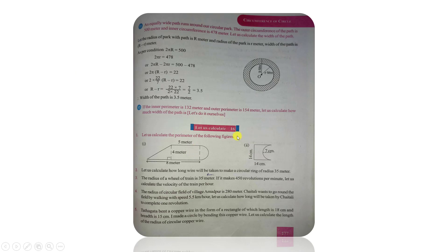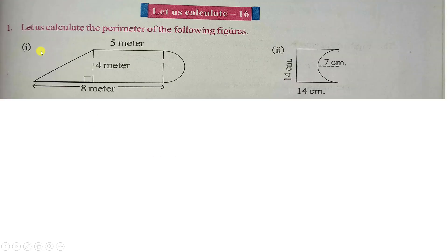Page number 277. Let us calculate Exercise 16. Here we start with question number 1: let us calculate the perimeter of the following figures. Remember, perimeter means the sum of the lengths of the boundary — the total boundary length.